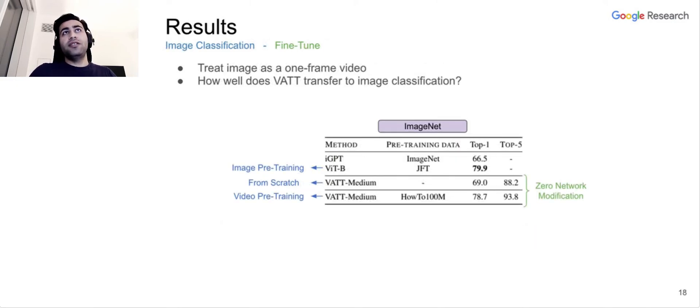So we have an interesting observation here. With zero model modification, we feed still images to the vision transformer part of the model. And we see that even though there is a domain gap, we still see significant improvement if we use video pre-training and audio pre-training pipeline. Then we fine-tune the whole model on image classification. We basically get comparable results to ViT-Base when it is pre-trained on self-supervised modeling on very large-scale JFT dataset.